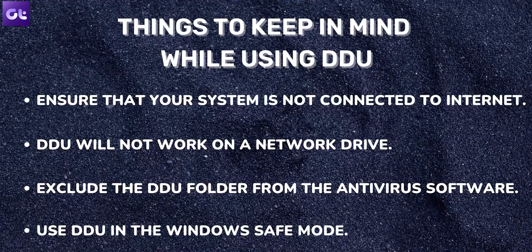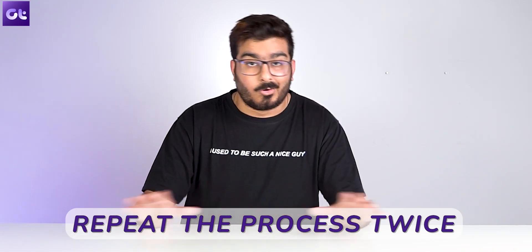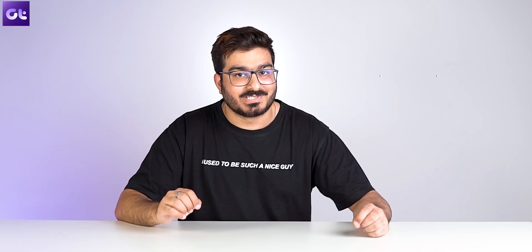Lastly, it's recommended to use DDU in Windows safe mode. This last point is an important one — ideally, I would suggest you use it with safe mode on. In this guide, we will be following that method. However, if you don't want to use safe mode for some reason, the whole process can still work; you just have to repeat the process twice to ensure all files have been cleaned. Now that we've established the ground rules, let's start with the actual process.